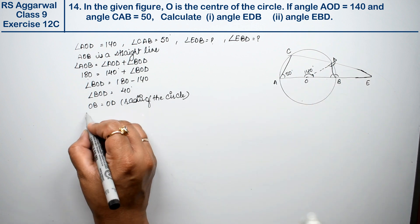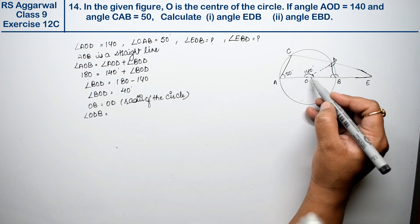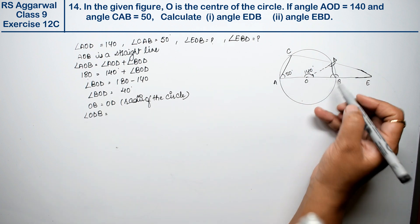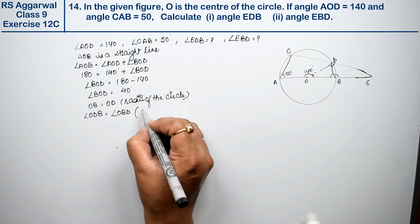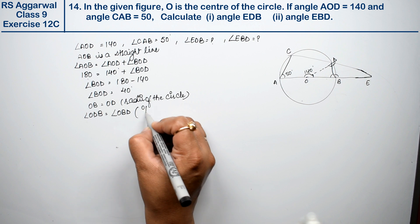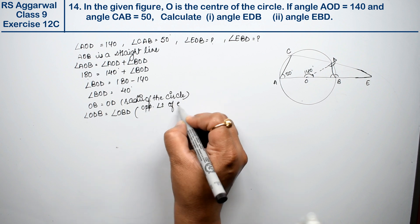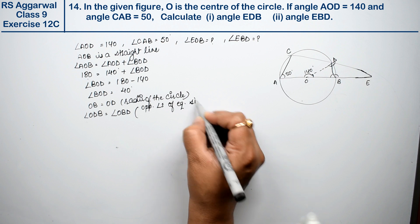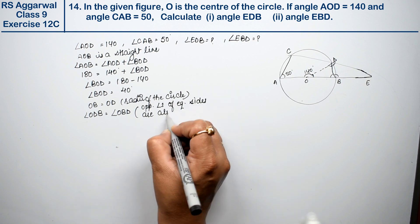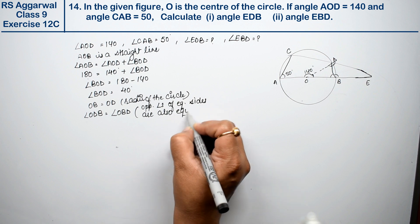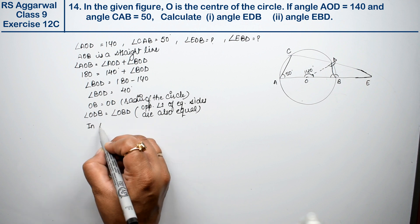Angle ODB equals angle OBD, because opposite angles of equal sides are also equal.